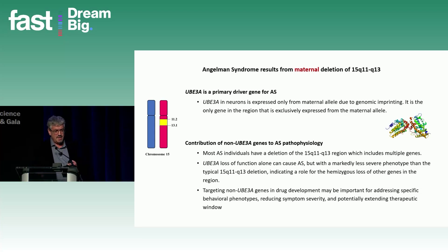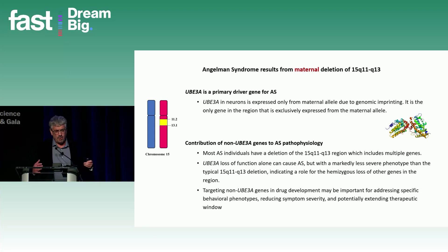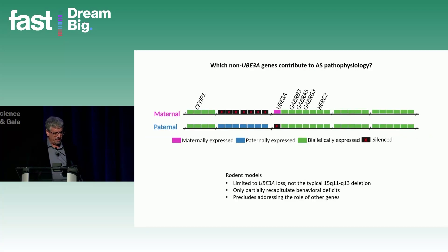We know that for at least some aspects of Angelman, UBE3A reinstatement is important to be done very early. There's a possibility that some of these other genes may contribute over a longer time period, so targeting them may extend that potential therapeutic window.